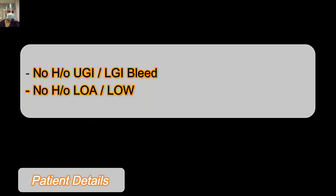There was no history of upper GI or lower GI bleed, and no history of loss of appetite or weight loss. We specifically highlighted this history because these patients can present with end-stage liver disease, or there can be concomitant cholangiocarcinoma — so these histories become important, as will become clearer as the discussion evolves.